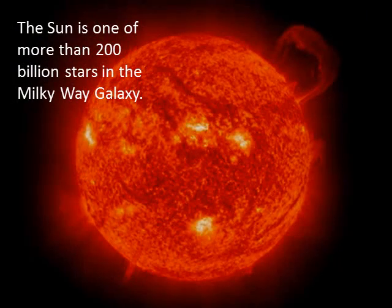Here is our sun. This lovely image of the sun was taken with a very special filter that allows in only a narrow band of light. It lets us see features like that big prominence in the upper right and solar flares.